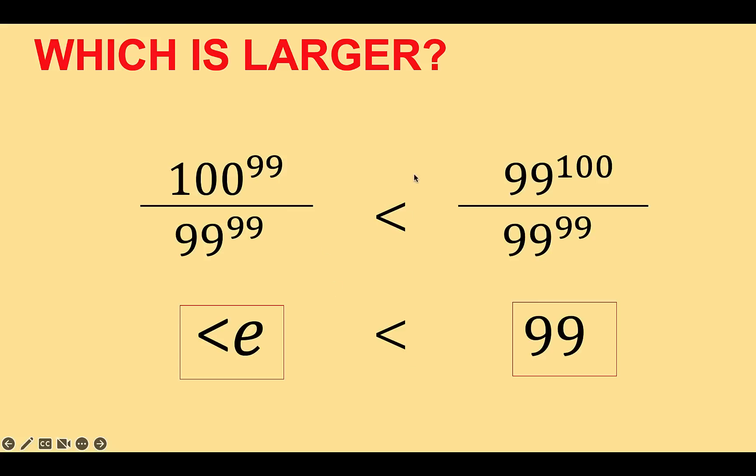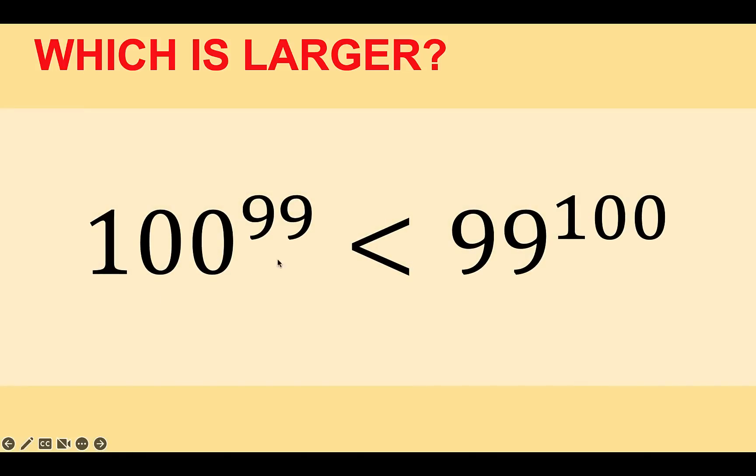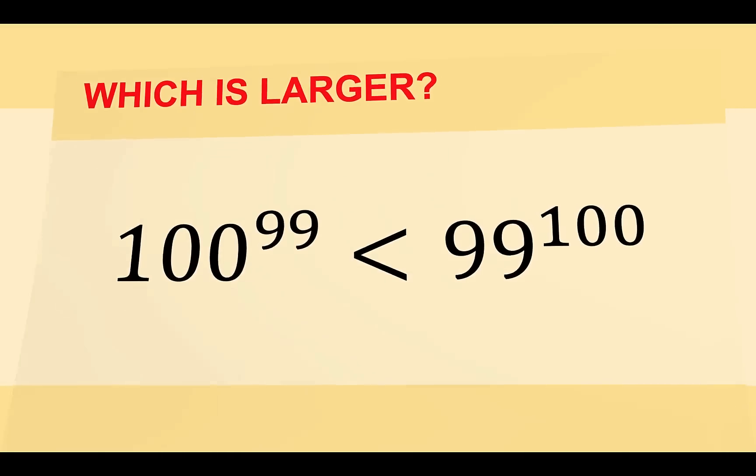If the original relationship is less than, the relationship at the bottom must also be the same as the original or vice versa. And since we found out that 2.7 is less than 99, then we are also sure that the original expressions 100 raised to 99 must be less than 99 raised to 100. And this is now our final answer.